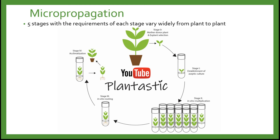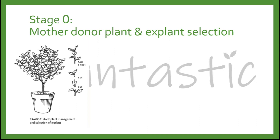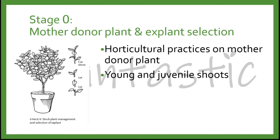Let's go through the micropropagation stage by stage. Stage 0 is the maintenance of mother donor plant and explant selection. We have to apply horticultural practices on the mother donor plant, such as watering, trimming, fertilizing with the correct amount, as well as spraying fungicide and insecticides if needed. In micropropagation, the explant is usually chosen from the young and juvenile shoots.